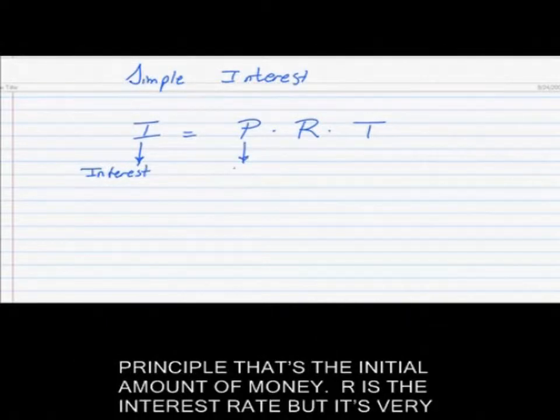Interest is the amount of interest that you either make or you pay back. P is the principal, that's the initial amount of money. R is the interest rate, but it's very important you use a decimal or fraction version of your percent interest rate.